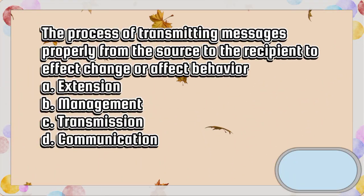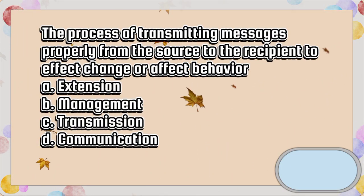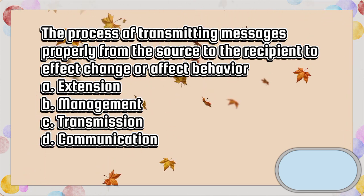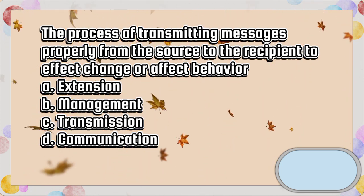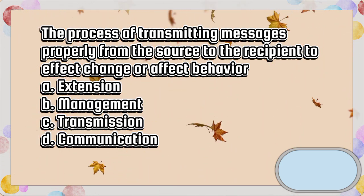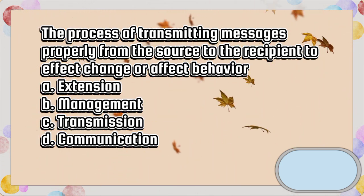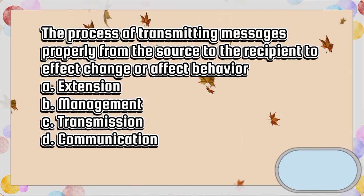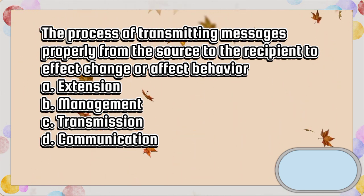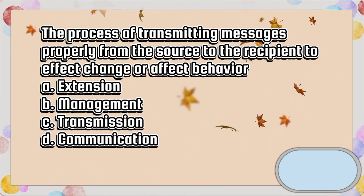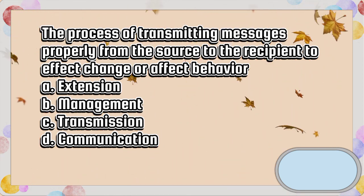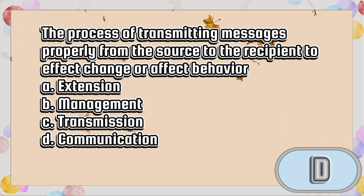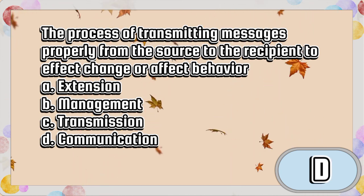The process of transmitting messages properly from the source to the recipient to affect change or affect behavior is called: A. Extension, B. Management, C. Transmission, D. Communication. The answer is letter D.